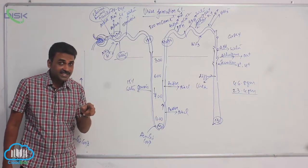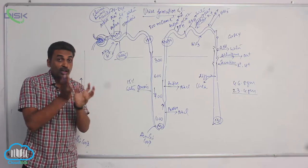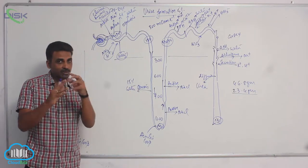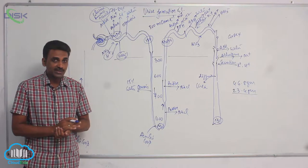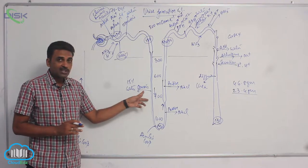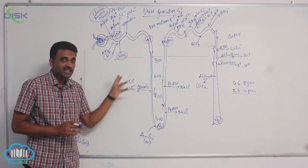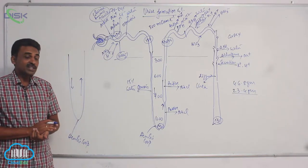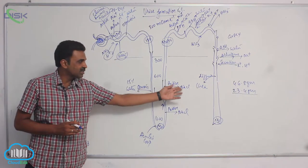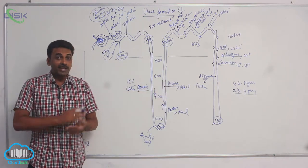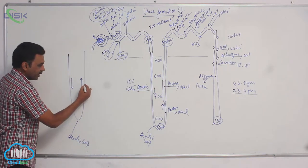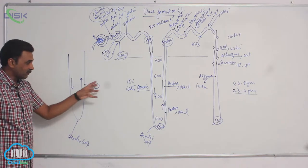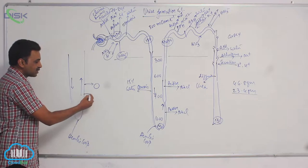In the descending limb, only water is coming outside. The water is coming outside by osmosis, because the concentration outside is more. That higher outside concentration is because of salts that are actively pumped from the ascending limb — some salts are pumped out using energy.